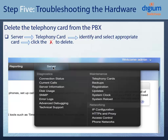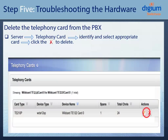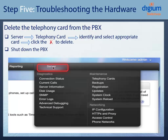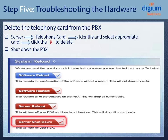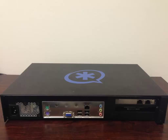Next, you will need to delete the Telephony Card and shut down the PBX. Go to Server, select Telephony Cards, then select the appropriate Telephony Card and click Delete. Go back to Server, click on System Reload, and click on Server Shutdown. Then you will need to disconnect all the cables from the PBX and remove the PRI card from the system.